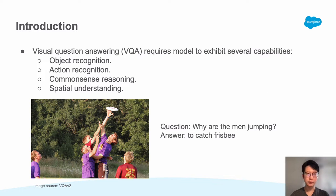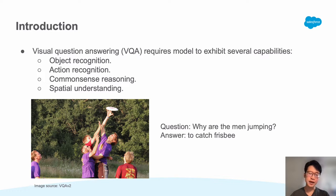VQA requires a model to generate an answer given an image and a question. It is a challenging task and the models need to exhibit multiple capabilities. For example, for a given question, the model needs to recognize the action of jumping, reason, and identify the man and frisbee as objects in order to generate the answer 'catch frisbee'.